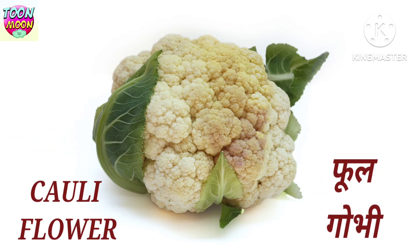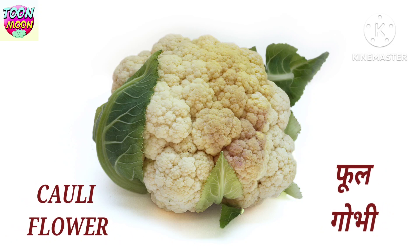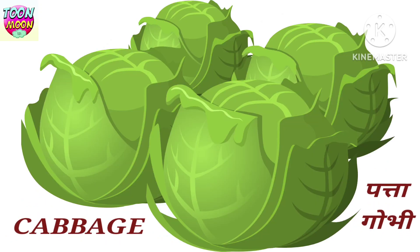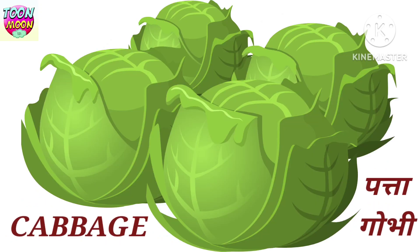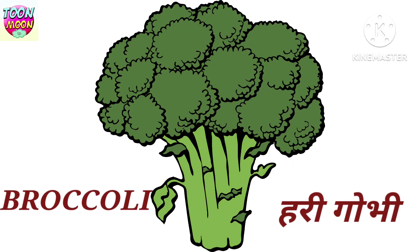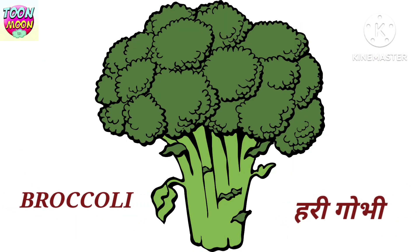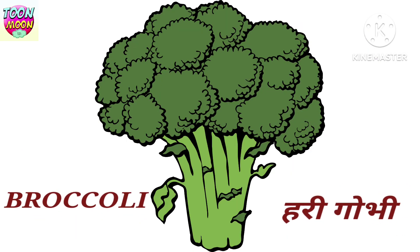Cauliflower. Cauliflower means Pool Gobi. Cabbage. Cabbage means Patta Gobi. Broccoli. Broccoli means Harikobi.